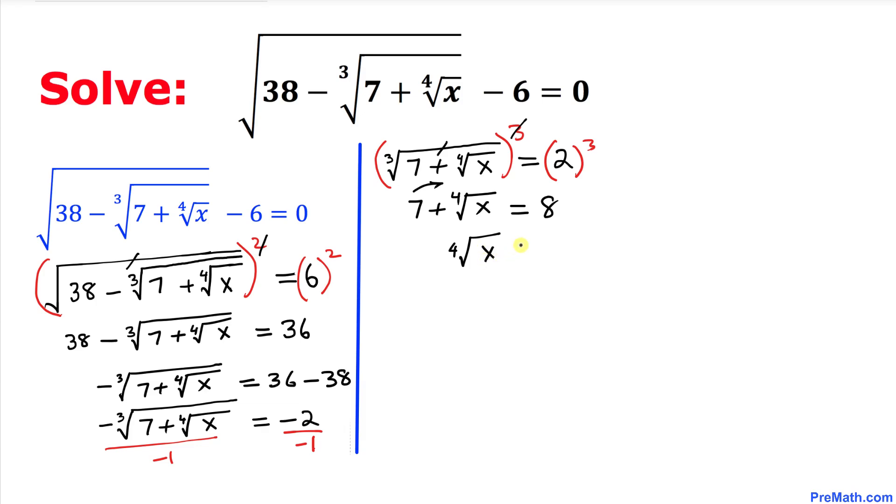So this fourth root of x equal to 8 minus 7. Therefore we got the fourth root of x equal to positive 1. We are almost done.